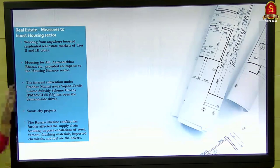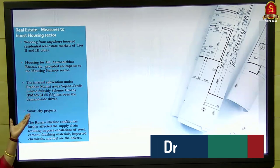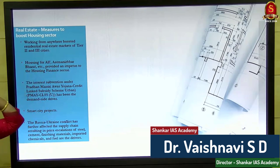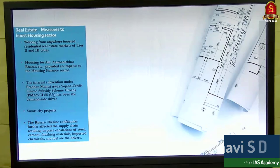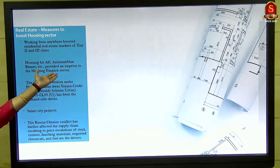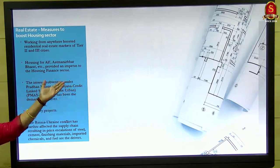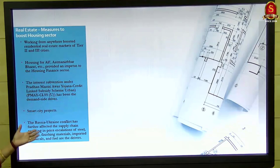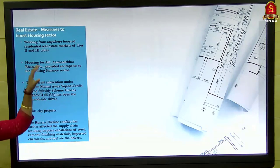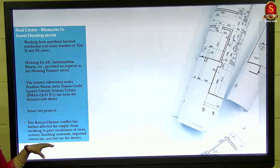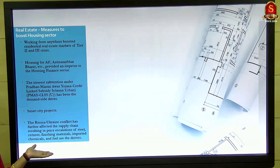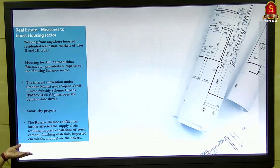Regarding real estate, the government has also come forward with housing for all — the Awas Yojana running for several years, constructing houses in rural regions. Smart city projects are also improving. But with all these positive things, there is still difficulty in construction: getting raw materials like steel, iron, cement and others, many of which are imported, is getting affected due to the war and inflationary situations.